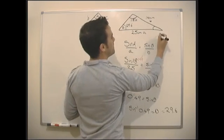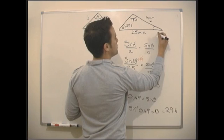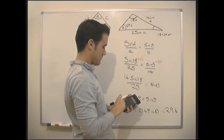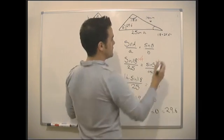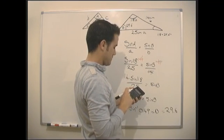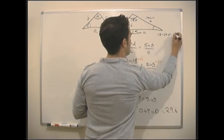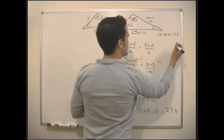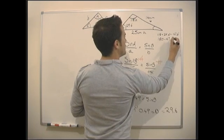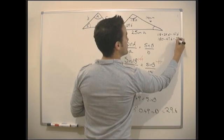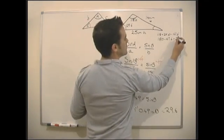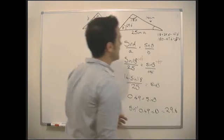So to work out that angle, remember, we do 118 plus 29.6 gives us 147.6. And then we just do 180 minus 147.6, which will give us 22.4. No, sorry, 32.4. My notes are wrong. 32.4.